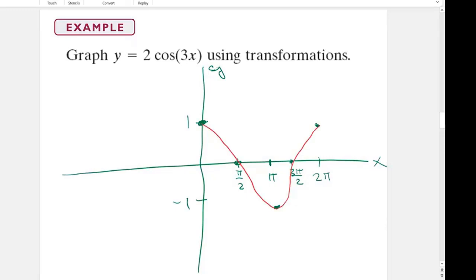And if I connect all my dots, I have one cycle of cosine. And again, it continues on forever in both directions.